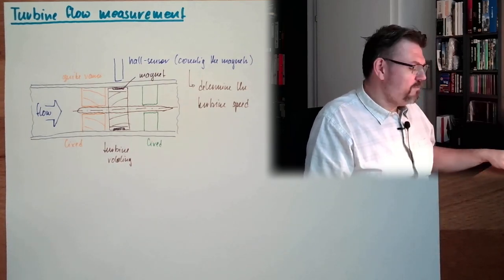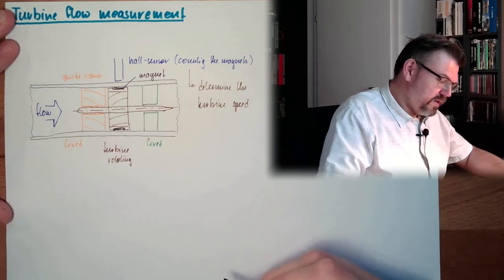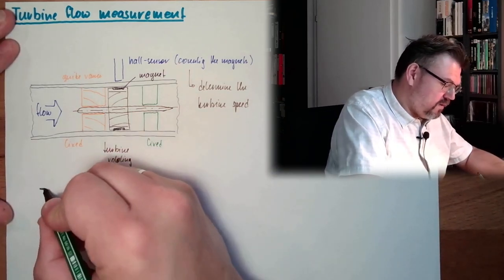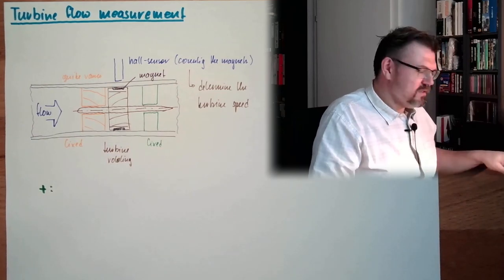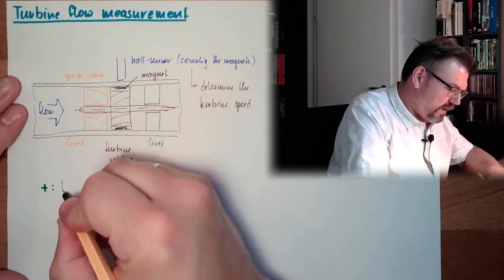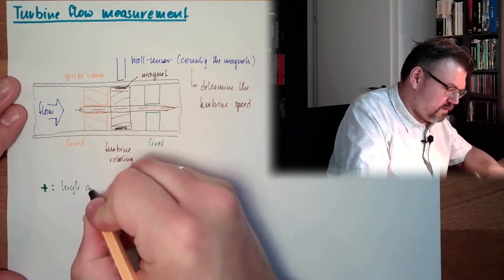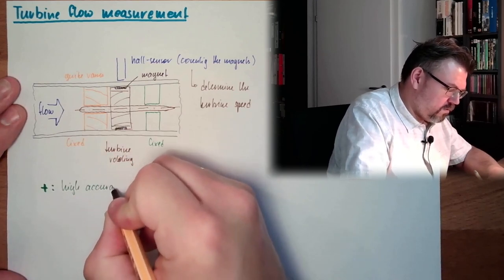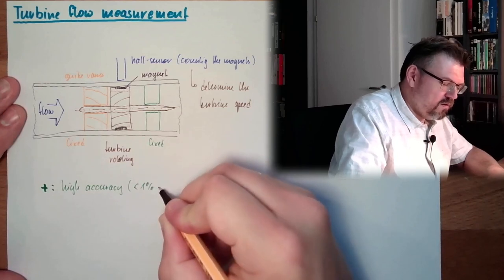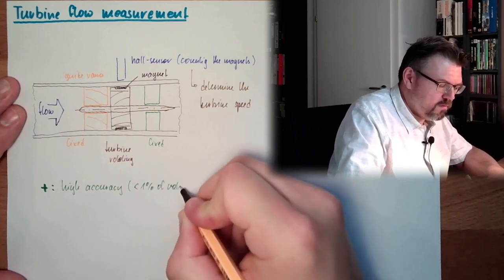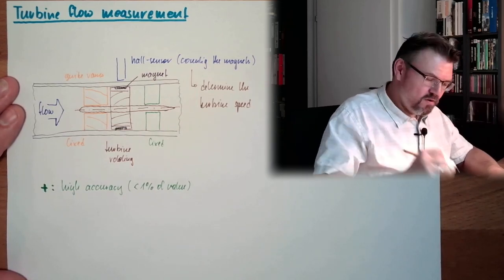All right. So the big benefit of turbine flow measurement is it has quite high accuracy. High accuracy. Smaller than one percent of value, if the viscosity is known.